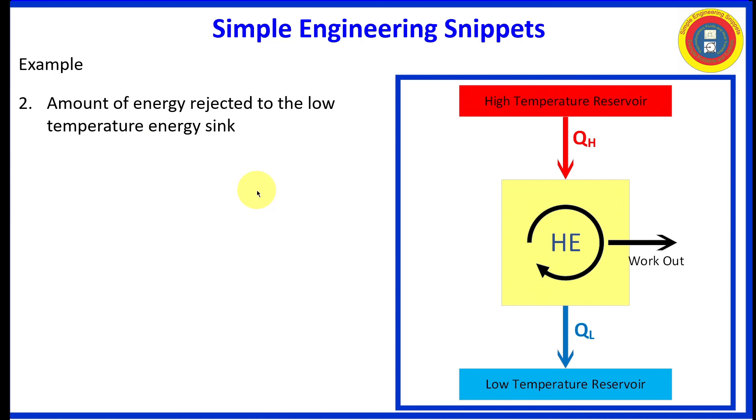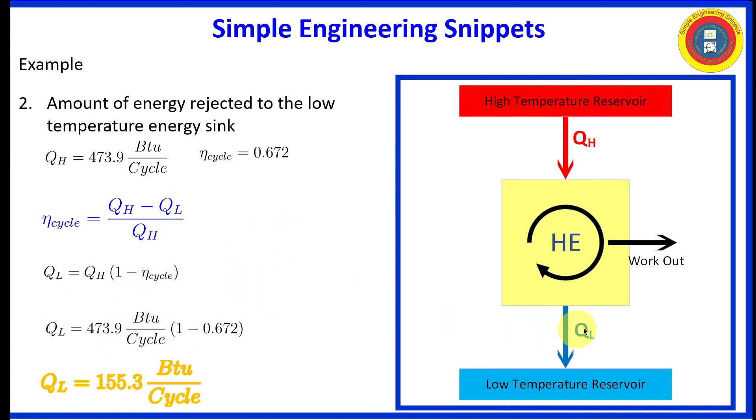Now to calculate the amount of energy rejected to the low temperature reservoir. We've already calculated the cycle efficiency and we have the equation for that so we can solve that for our heat rejection term. It is equal to the energy in times the quantity one minus cycle efficiency. So plugging in the known values, we obtain that the amount of heat rejection is 155.3 BTUs per cycle.